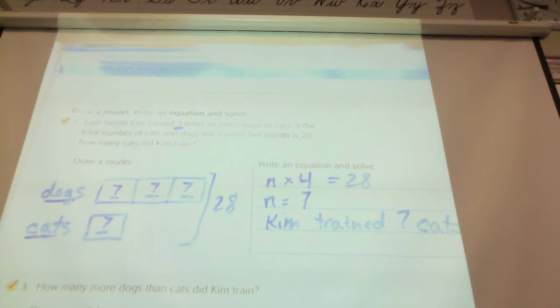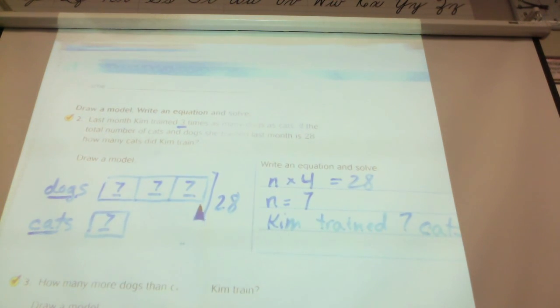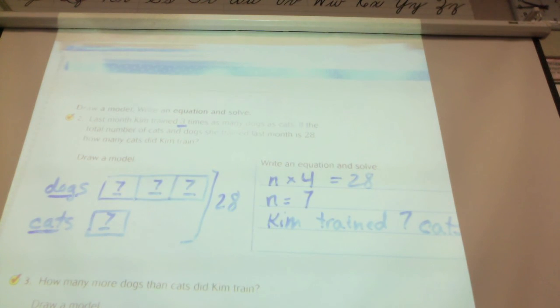By counting by sevens up here? Where the dogs are? Okay, so you count it by seven. Seven, 14, 21. Or you can use multiplication. Or you can just add. Seven plus seven plus seven. All right.